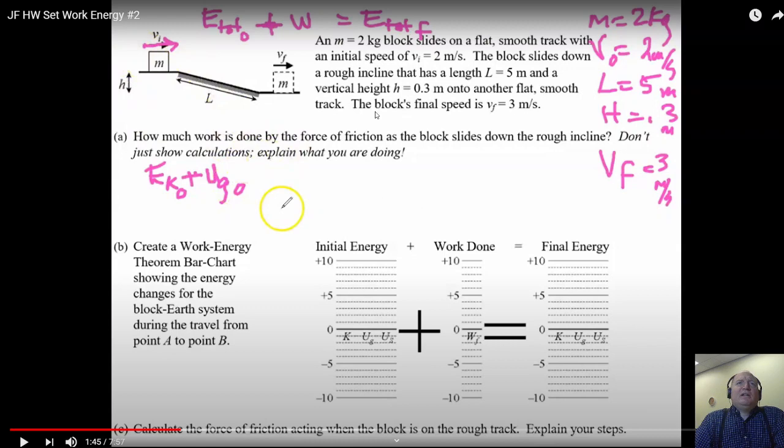How much work is done by the force of friction as the block slides down the rough incline? I love that italics. Do you understand what we need to do? We need to say E total before plus the work done should equal E total after. And what energy does it have before? Tell me the type.